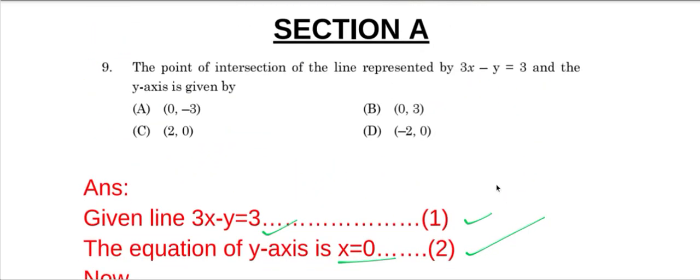So the answer, the point of intersection of this line, is 0, minus 3. So option A is the correct answer. Thank you.